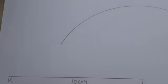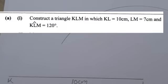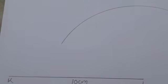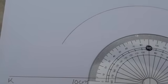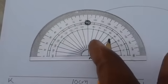To locate where M is, we use the given angle. They say angle KLM is 120 degrees, so get your protractor. This is how you measure angles using a protractor, so you have to note this.